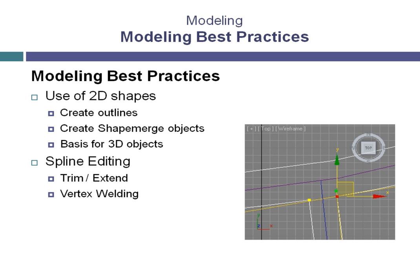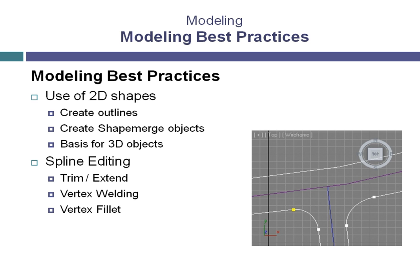Vertex welding, when used properly, can be a very handy tool for cleaning up complex shapes. Cleaning up complex shapes not only makes for cleaner models, but it can also help reduce the polygon count when those shapes are turned into three-dimensional models. This also has the result of helping to reduce render time. Using the vertex fillet tool when editing splines simplifies the process greatly and creates a uniform and consistent result, also reducing the number of steps needed to create a rounded corner when editing splines in 3ds Max.